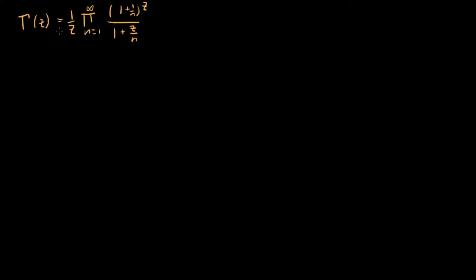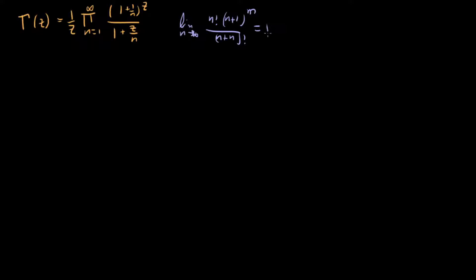But how do we actually show this is true? I'm going to do it first by proving that the following limit is true. I want to show that the limit as n goes to infinity of n factorial times n plus 1 to the m, times m, over n plus m factorial, is equal to 1.